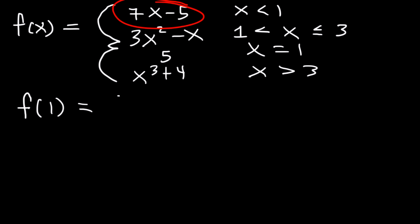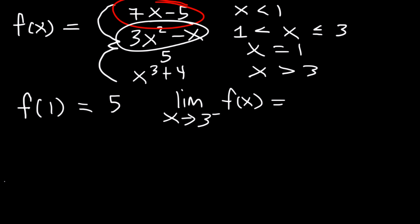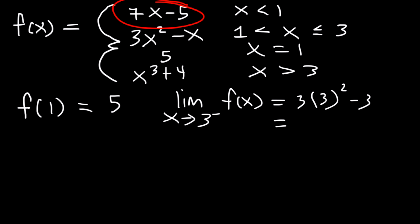What is the limit as x approaches 3 from the left side? That's when x is less than 3, so we use 3x squared minus x. Plugging in 3: 3 times 3 squared minus 3. 3 squared is 9 times 3, that's 27, and 27 minus 3 is 24.